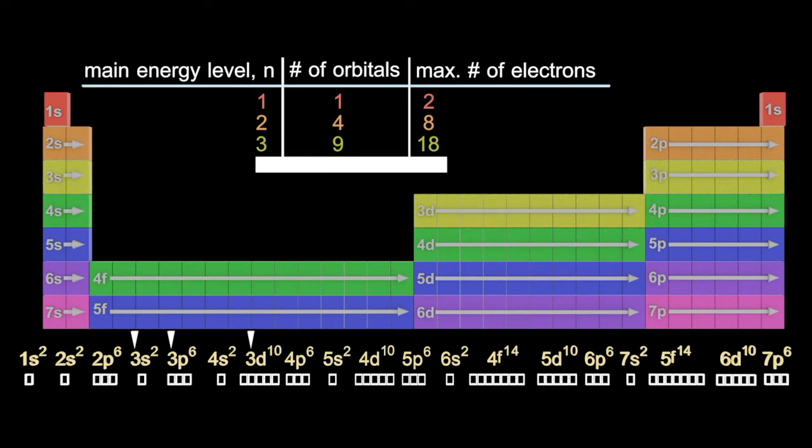Third main energy level, well there's nine boxes there. 3s, 5 from the 3d, 3 from the 3p, giving a total of nine.